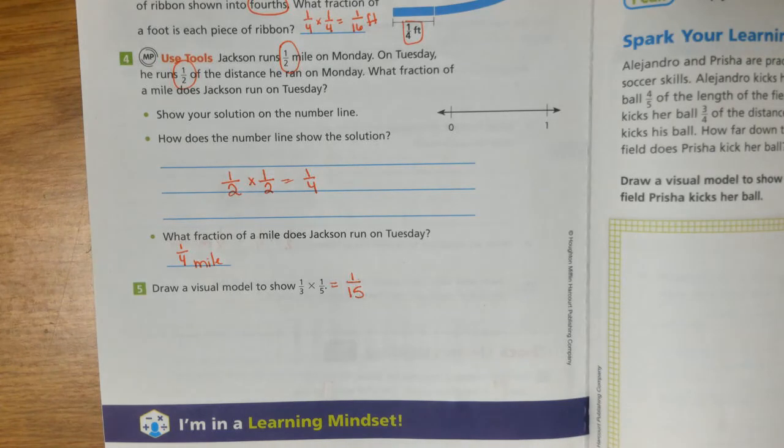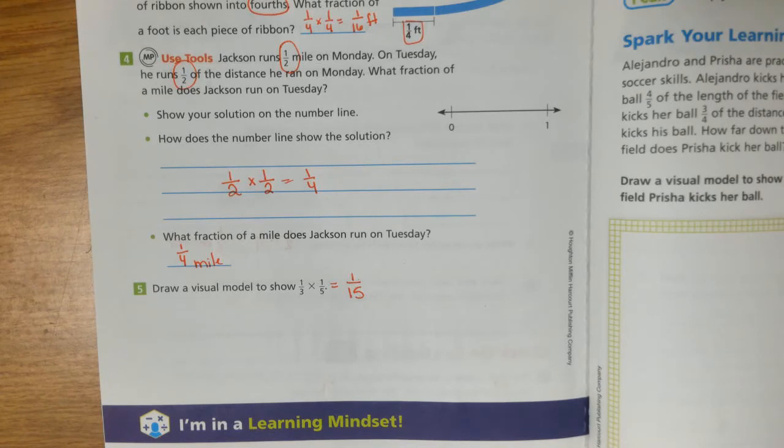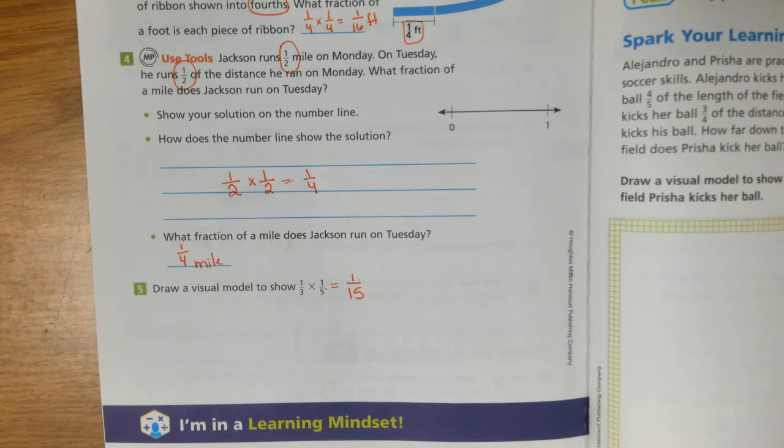So for your independent work, don't worry about drawing the models. Just do the fraction. So when you get to number one, you can skip those first two bulleted points and just find the fraction of the supersized drink and the mini-sized drink. So you're just multiplying. Just don't worry about the number line. Don't worry about drawing a picture, unless you need it. If you need it to help you answer, that's fine. But you can just multiply. If you just multiply, that's what's going to give you your answer. And when you're finished, please turn it in to me at school. We'll see you soon. Bye.